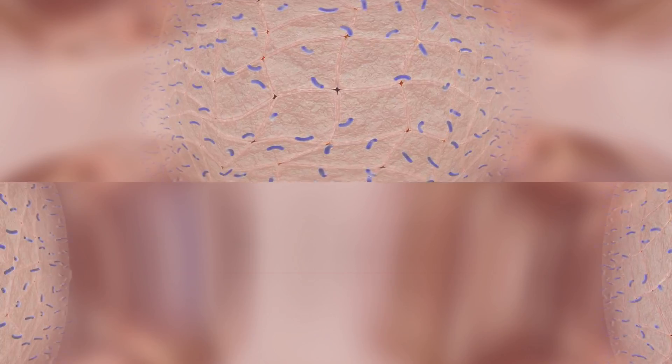You are at the skin surface where you can see the millions of microorganisms forming the stratum microbium. Just below, you can see corneocytes.